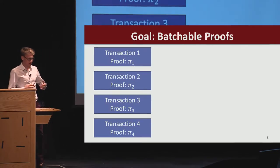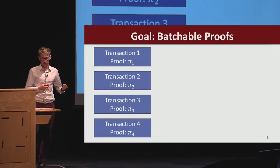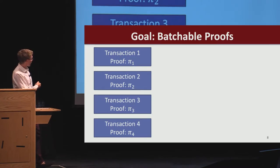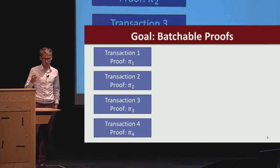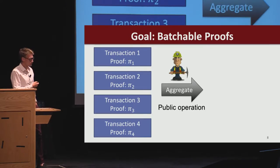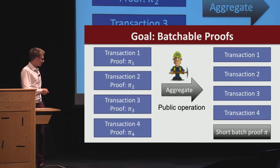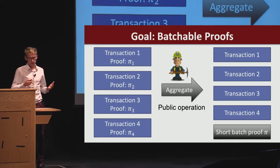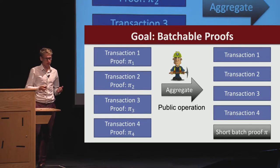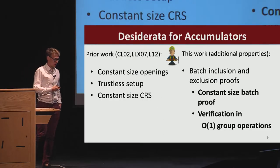Batchable proofs are also going to be very important in this application. If I have many transactions in a block and they all have separate proofs with respect to the same accumulator, what I would like to do is somehow aggregate these proofs—maybe a miner or some helper could do this—and create one single short batch proof. For a Merkle tree, for example, I couldn't do this: taking multiple Merkle paths together doesn't make them shorter than the individual Merkle proofs. So we need something more algebraic.